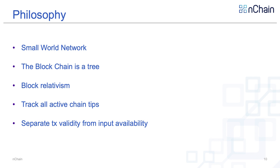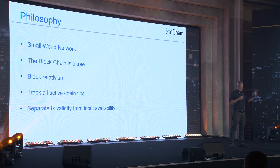This is about the principles of Terranode — how they differ from the existing node software. The small world network refers to how the node connects to every peer, not just eight or ten peers, but all of them. This will be built into the software so it can reach out to every single peer and connect to them. If we take the case of a miner, the most important job is to propagate blocks — to get the block they've mined out to the tip of the chain.